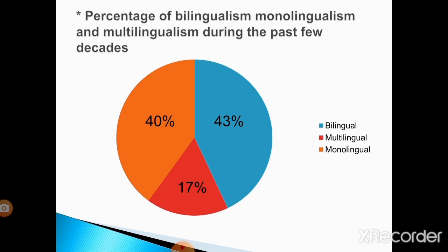Here is the percentage of bilingualism and multilingualism during the past few decades. As we can notice: for bilingualism it is 43 percent, for multilingualism it is 40 percent, and for monolingualism it is only 17 percent. So we can say that the dominant one worldwide is bilingualism.